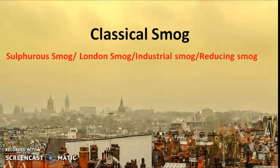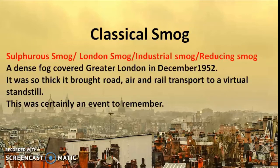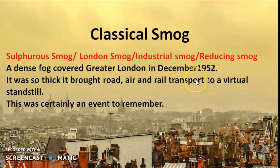Let us first take up classical smog. As mentioned earlier, it is also called sulphurous smog, London smog, industrial smog, or reducing smog. It was first observed in 1952 in London, where it created a great deal of traffic disruption — for four to five days, the transportation system was virtually brought to a standstill.